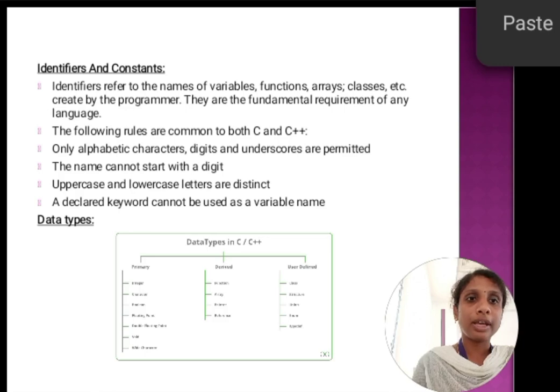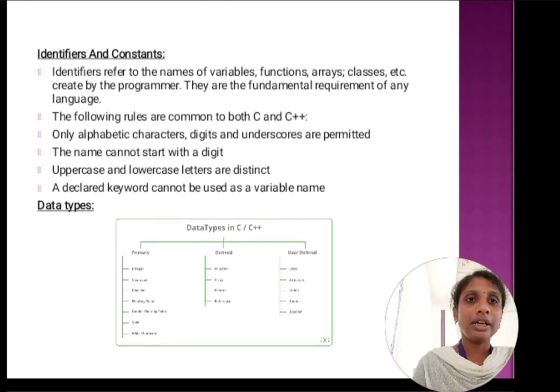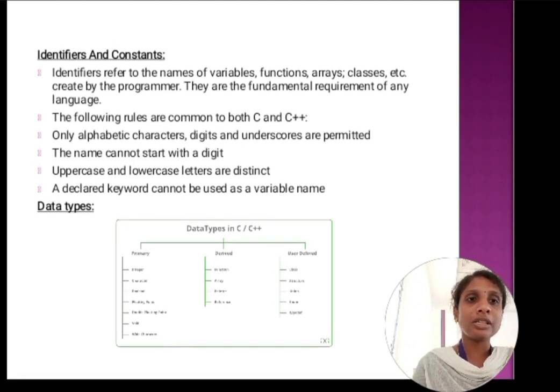Next rule is, upper and lower case letters are distinct. C++ is a case-sensitive language. Declared keywords cannot be used as variable names because keyword is a reserved word. It cannot be used for naming the function names or array names or class names. Next one is data types. Data types are classified into three types: primitive, derived, and user-defined data types.